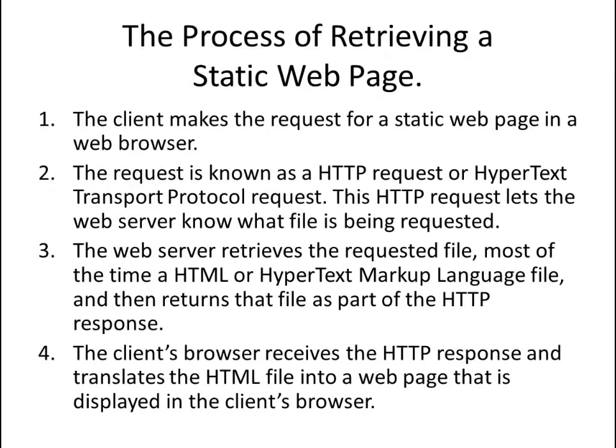The process of retrieving a static web page: the client makes the request for a static web page, most likely in a web browser. The request is known as the HTTP request, or Hypertext Transport Protocol request. This HTTP request lets the web server know what file is being requested. The web server retrieves the requested file — most of the time it's the HTML, or Hypertext Markup Language, file — and returns that file as part of the HTTP response. The client's browser retrieves the HTTP response and translates the HTML file into a web page that is displayed on the client's browser.